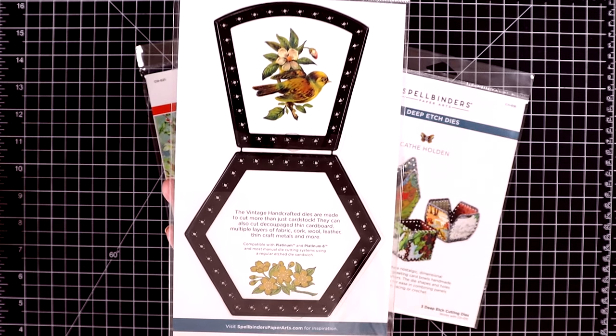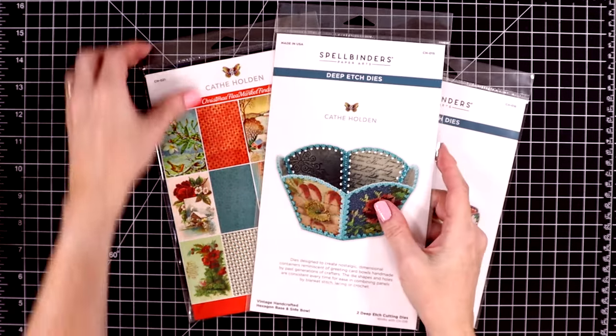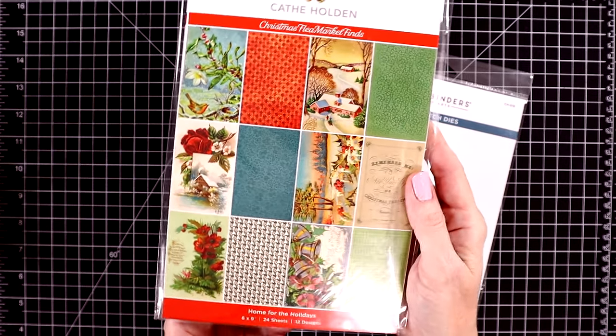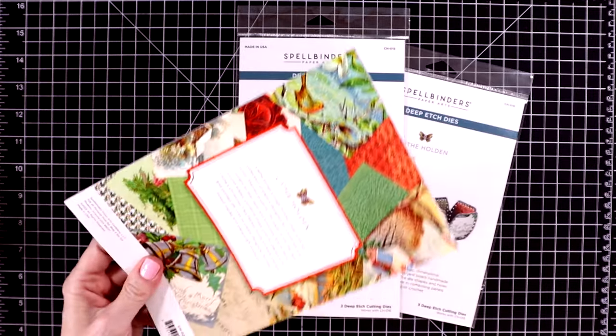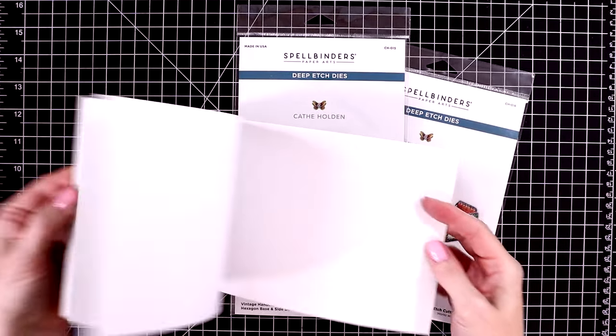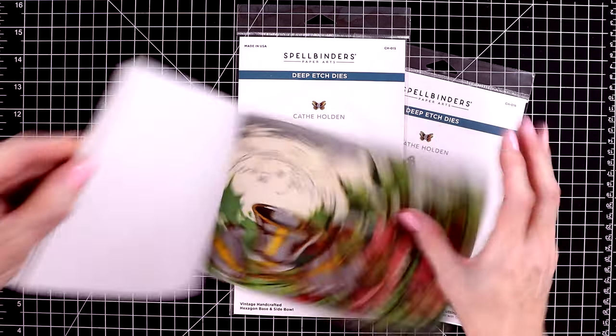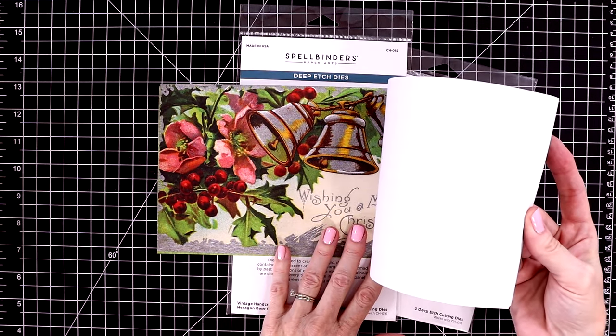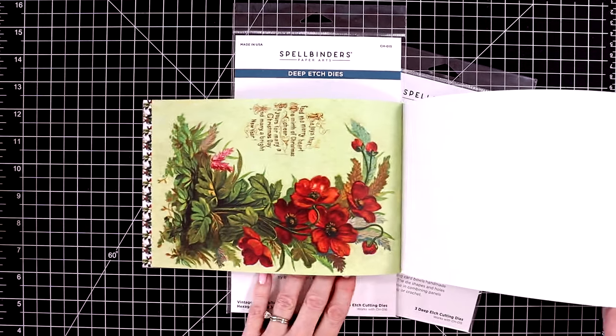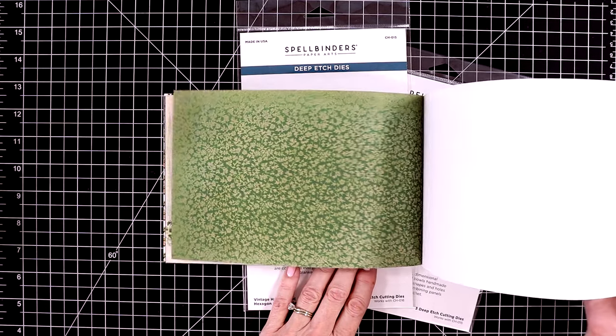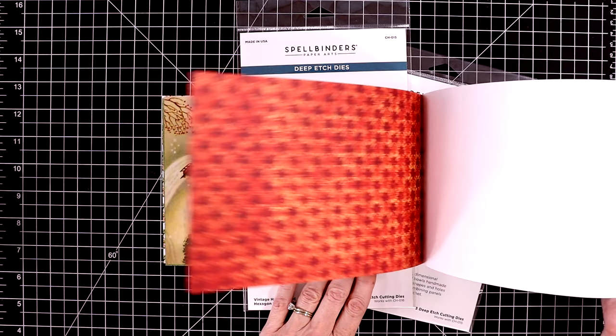These were designed by Kathy Holden. I also have some of her beautiful pattern paper. This one is called Home for the Holidays and it is a six inch by nine inch pad of paper. Let me flip through this for you. The pattern paper is very lightweight, I thought it was going to be a bit thicker, but I'm going to still use this to create my greeting card bowls.